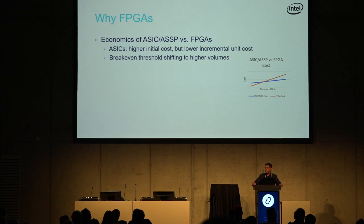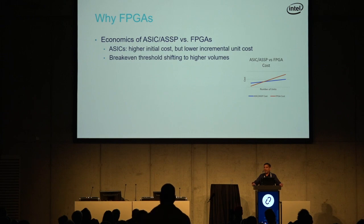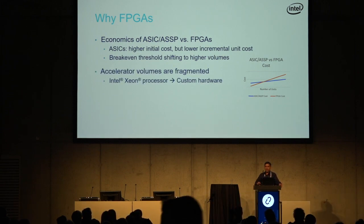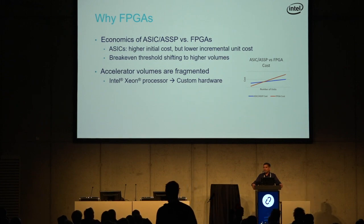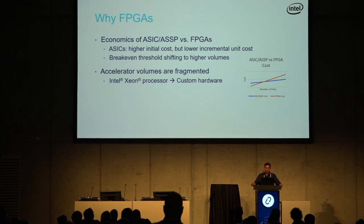Over time, the initial cost of an ASIC is going up, so the threshold is shifting. The incremental cost for FPGAs is not as high as it used to be, so the threshold point is shifting to the right. The net result is that where we considered FPGAs suitable only for prototypes in the past, now they're fit to be used as a regular offload device. Additionally, accelerator volumes are getting fragmented — for something like a genomics algorithm like Smith-Waterman in HPC, it's very unlikely there's enough market for an ASIC, so it's much more economical to use FPGAs.